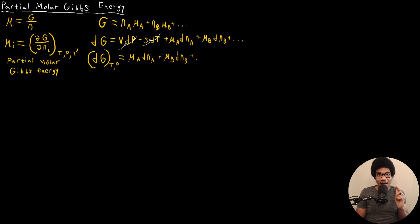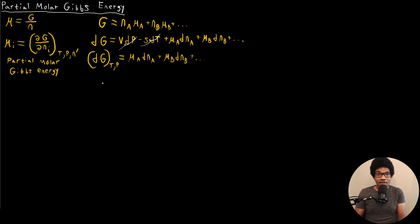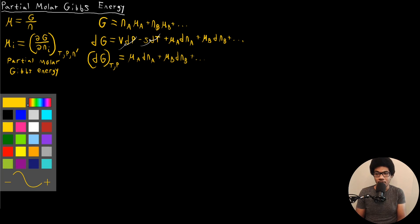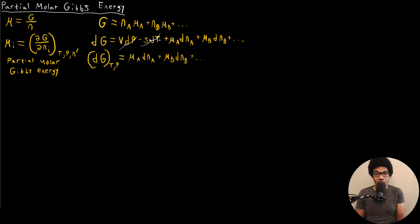It's not only the Gibbs energy that we can define a chemical potential for — we can actually do this for any of our thermodynamic potentials. We can define the chemical potential based on any energy property. Let's show this with the internal energy first, making use of the differential we now have for dG in order to derive this for other cases.